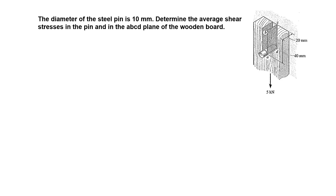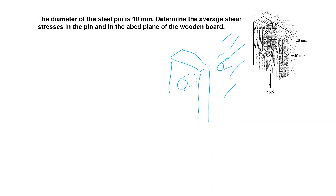Another problem: we have a wooden board with a hole that will be fitted onto a pin in a wall. When the load is applied, there are two critical sections — the shearing of the steel pin, and the shear-out of the wood along the surfaces behind the hole. If the 40 mm dimension is too small, the rod can be pulled out by shearing through these two planes.